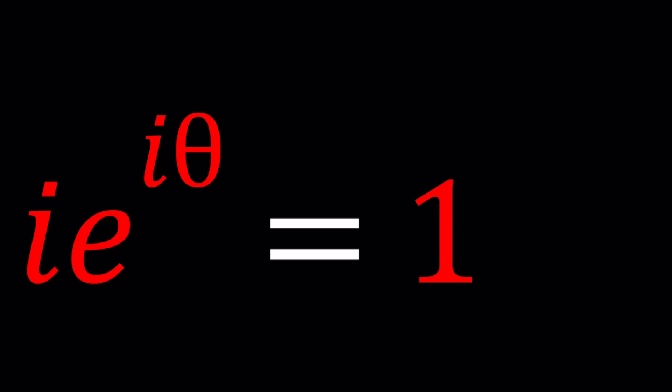We have i times e to the power iθ equals 1 and what are we going to solve for? There is no z, there is no a plus bi, there is nothing to solve for, right? No, not really. Actually theta is the unknown here. We're going to be solving for theta. That's the only thing we can solve for because i is a constant.